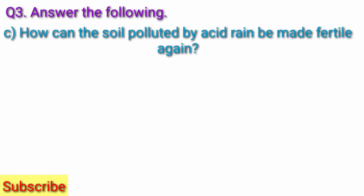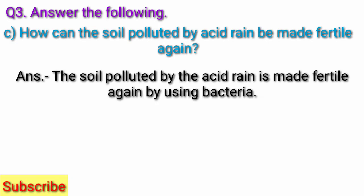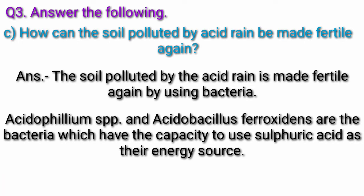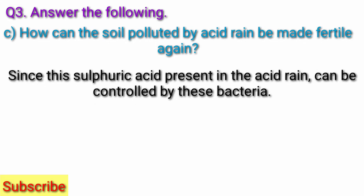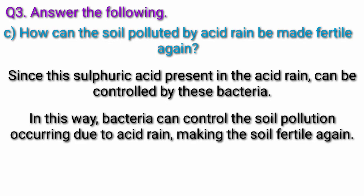How can the soil polluted by acid rain be made fertile again? The soil polluted by acid rain is made fertile again by using bacteria. Acidophilium sp. and Acidithiobacillus ferrooxidans are bacteria which have the capacity to use sulfuric acid as their energy source. Since the sulfuric acid present in the acid rain can be controlled by these bacteria, they can control the soil pollution occurring due to acid rain, making the soil fertile again.